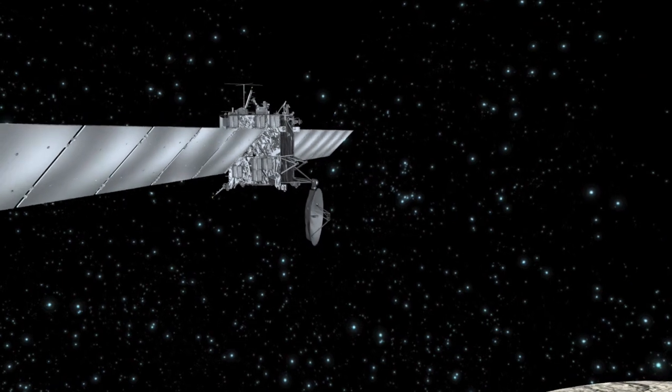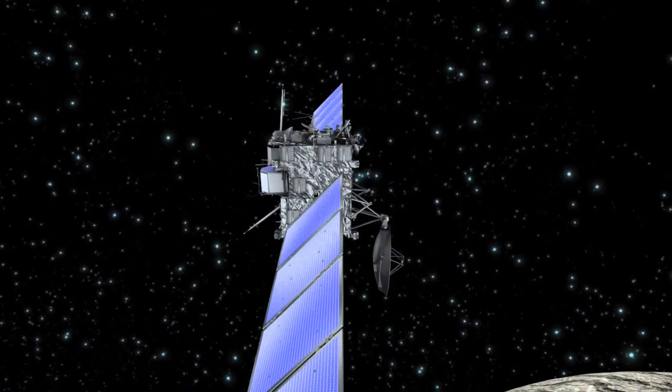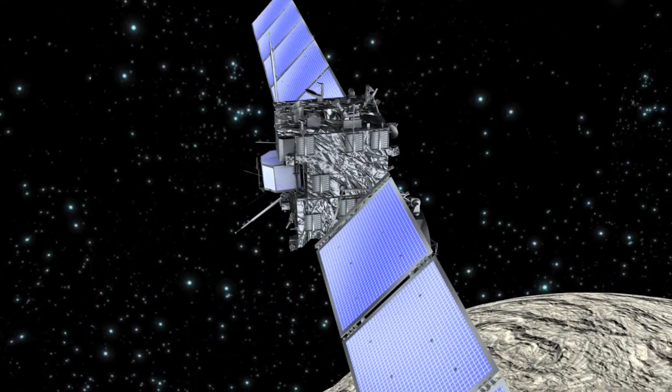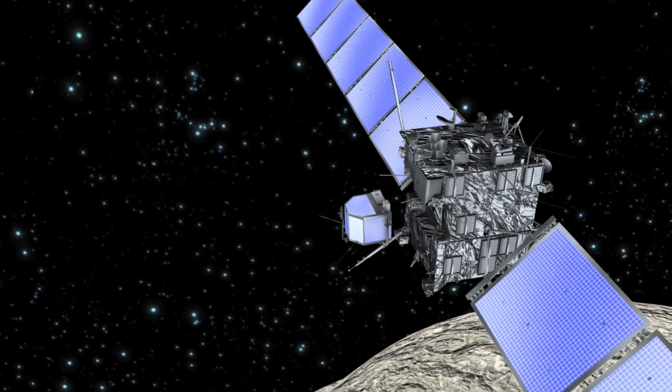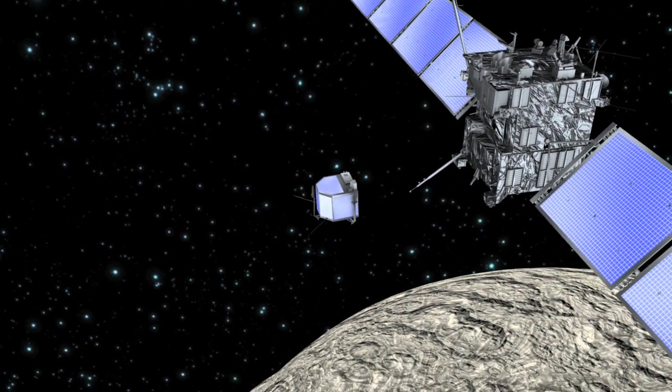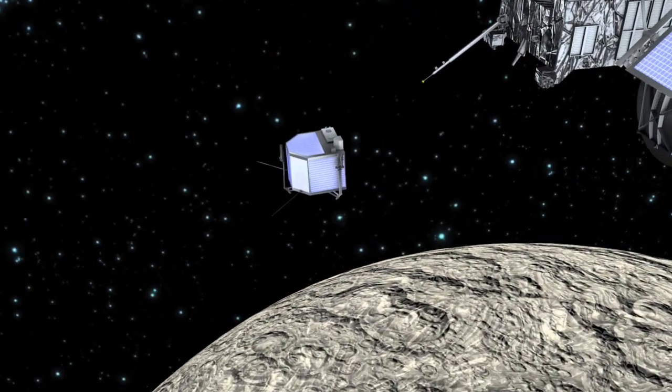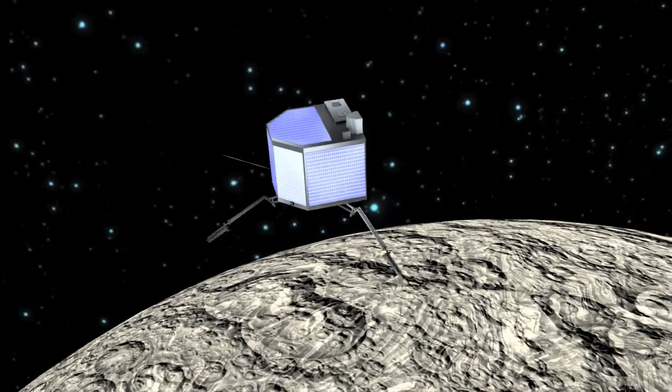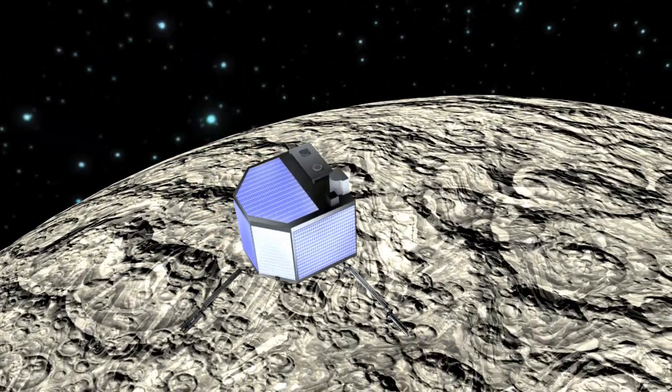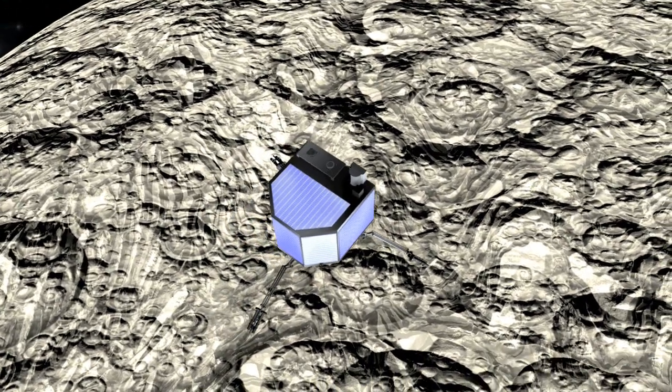Rosetta, ESA's next comet chaser, is on a 10-year journey through the solar system to encounter Comet 67P Churyumov-Gerasimenko in 2014. This spacecraft will go into orbit around the comet and deploy a small lander onto the icy nucleus.